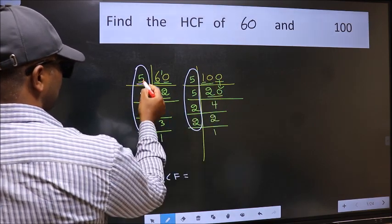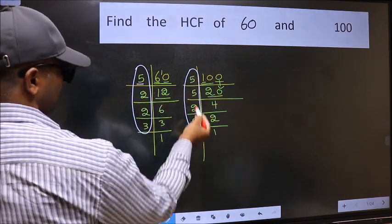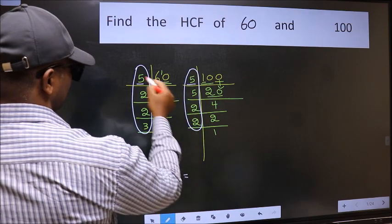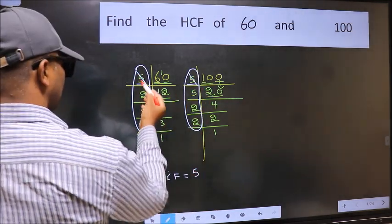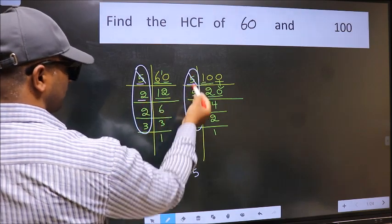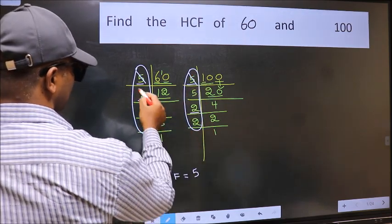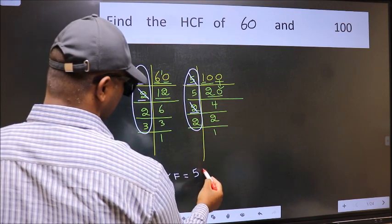Starting with the number 5. Do we have 5 here? Yes. So cut 5 right here. Next number 2. Do we have 2 here? Yes. So cut 2 right here.